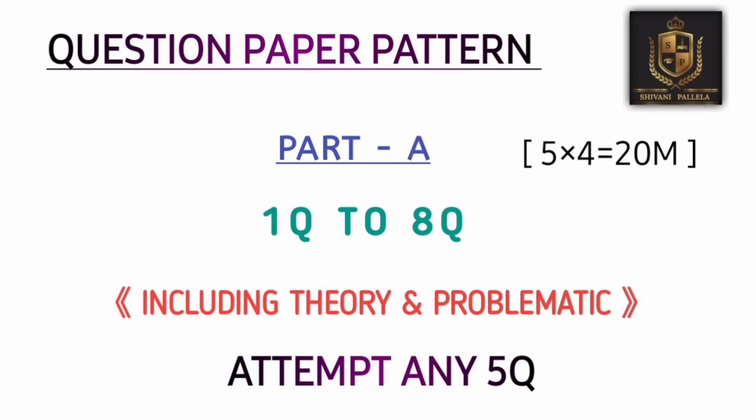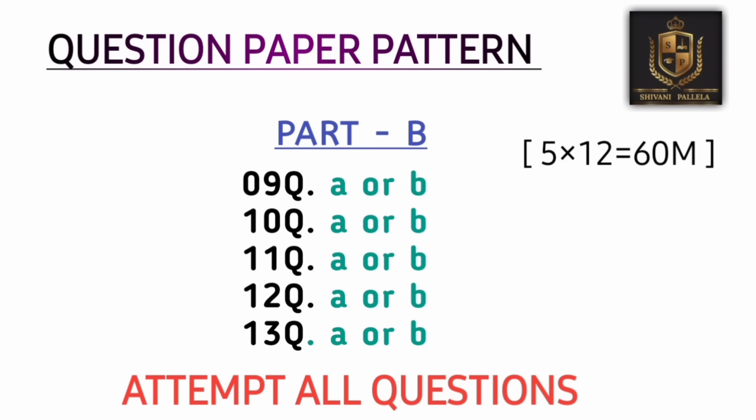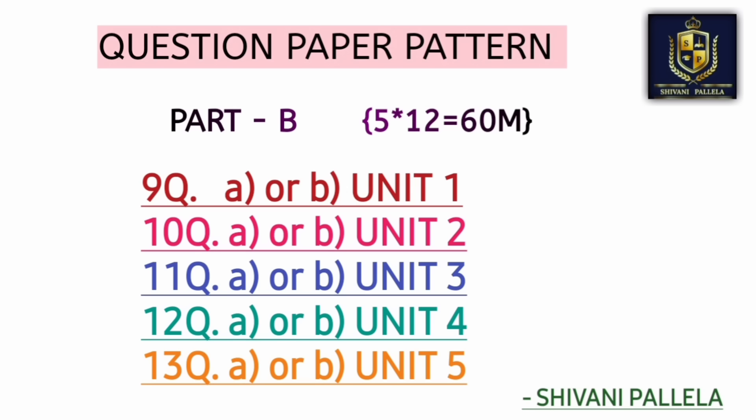First, let's understand the question paper pattern. In Part A, the total weightage is 20 marks. Questions one to eight are given, and you need to attempt five questions. Each question carries four marks, and it includes both theory and problems. In Part B, from question nine to thirteen, you need to attempt all five questions. Each question carries 12 marks, and each question has an internal choice. Question nine comes from unit one, question ten from unit two, and so on.